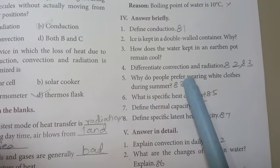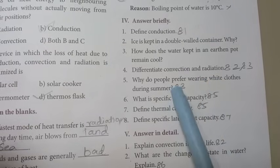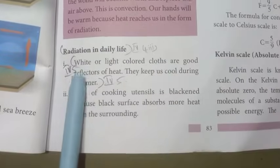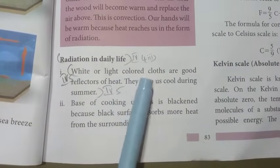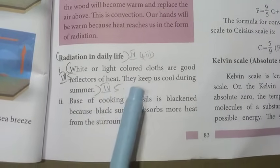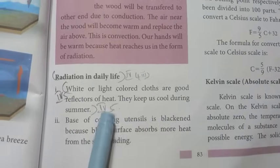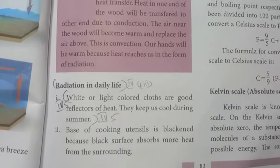Fifth one: Why do people prefer wearing white cloths during summer? Page number 83. Last time we have one point. This is the third point. White or light colored cloths are good reflectors of heat. They keep us cool during summer. Roman number 4, fifth one.